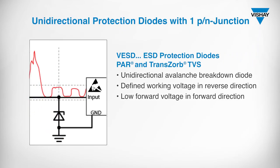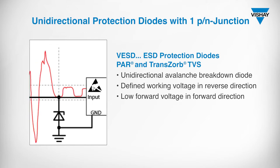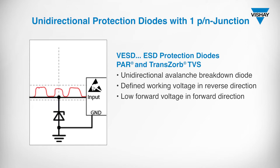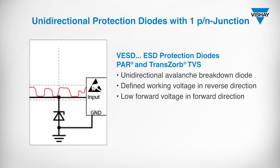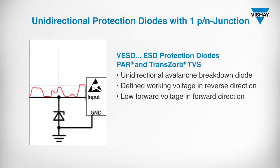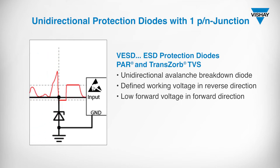In this image, a data signal is shown. The diode is connected between the data line and ground and is located in the blocking direction. In the working area of the application, the voltage is too low to put the diode into a conductive state, so the diode remains locked and does not affect the data signal. The working area is defined in one direction. As soon as the working range is disturbed or exceeded by an ESD pulse, the diode blocks the excess voltage and protects sensitive electrical components.